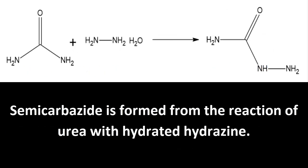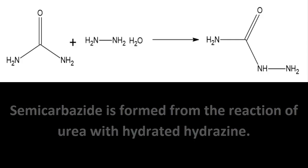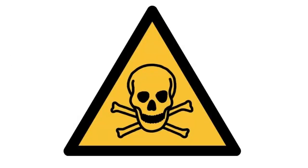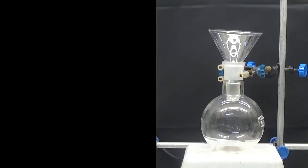Semicarbazide is formed from the reaction of urea with hydrated hydrazine. We will be particularly cautious with hydrazine because it is a highly toxic reagent. In this process we will work outside or in a fume hood.